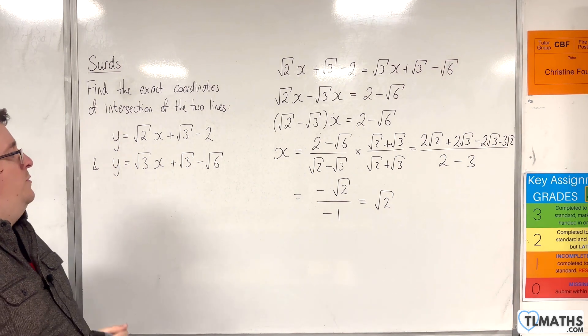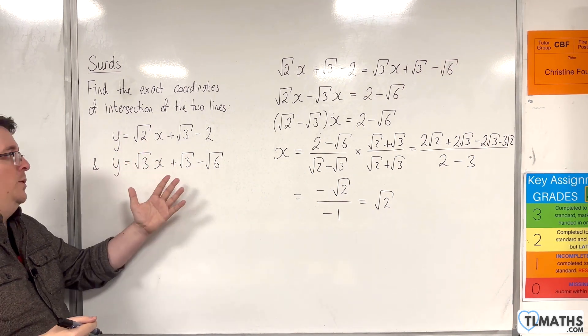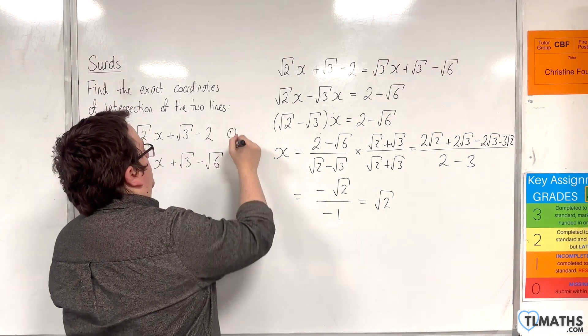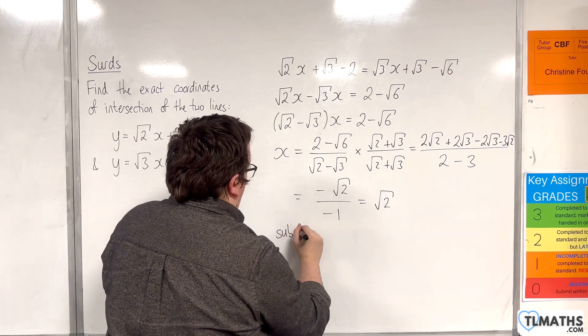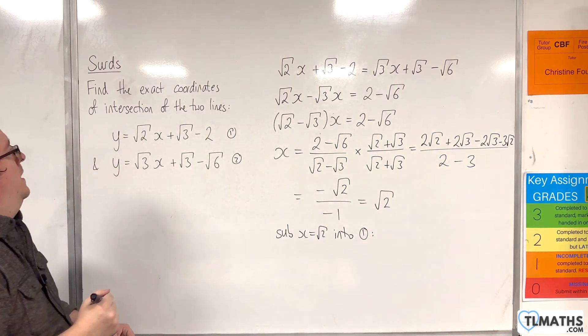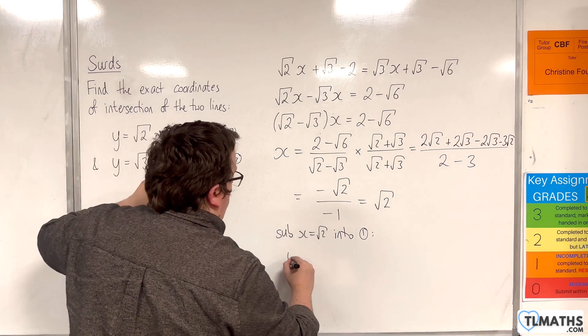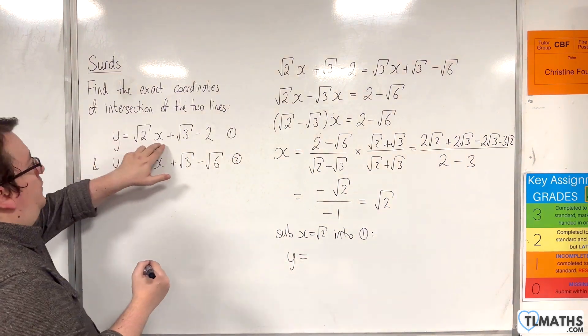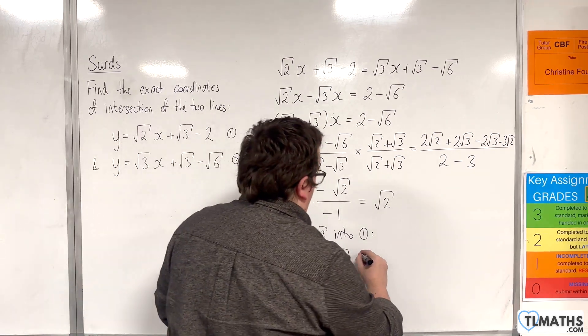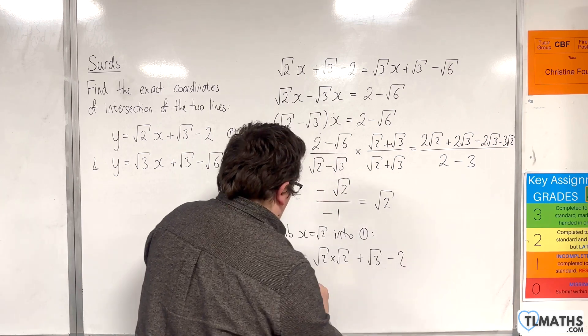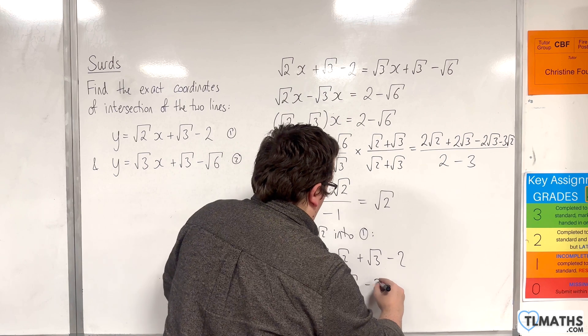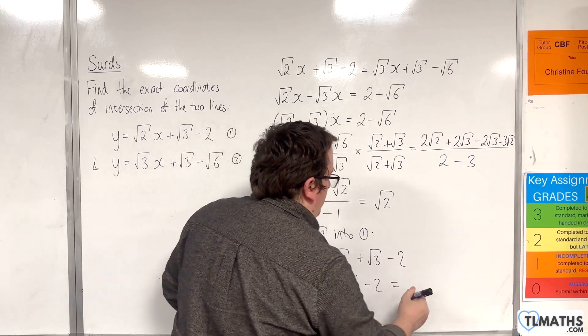Now, if x is equal to root 2, I can substitute it into one of the two equations. So I'll substitute it into equation number 1. So sub x equals root 2 into 1, and we'll get y equals root 2 times root 2 plus root 3 take away 2. So root 2 times root 2 is, of course, 2. So 2 take away 2 is 0, so we're just left with the root 3.